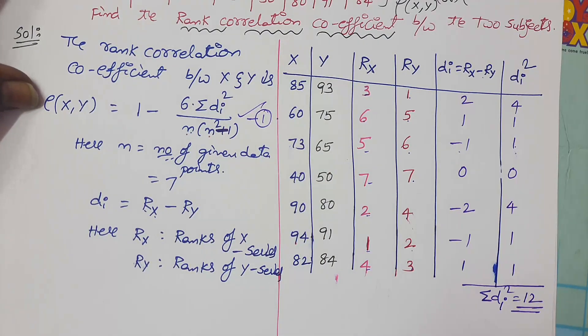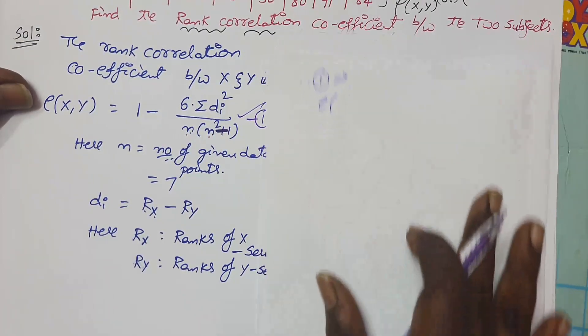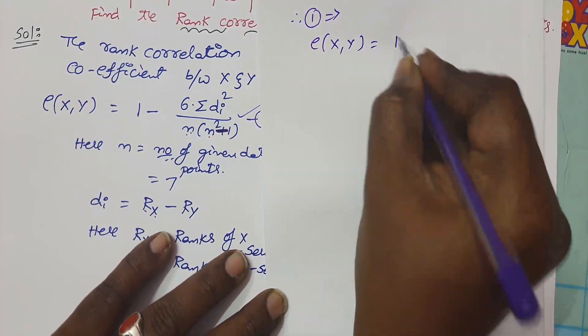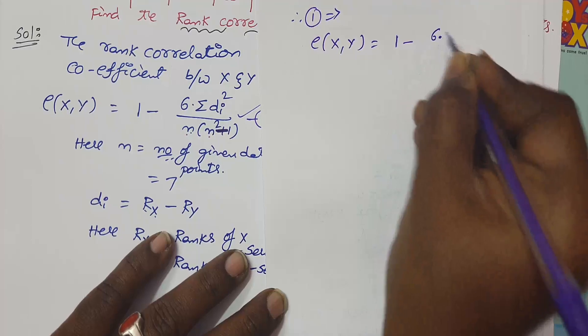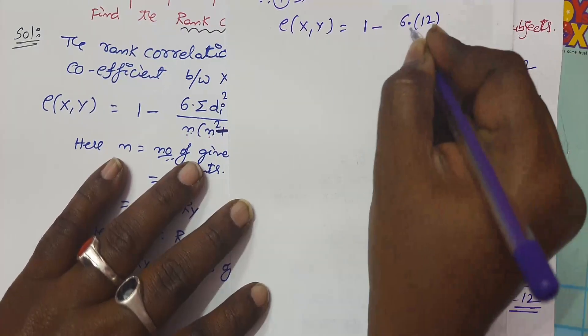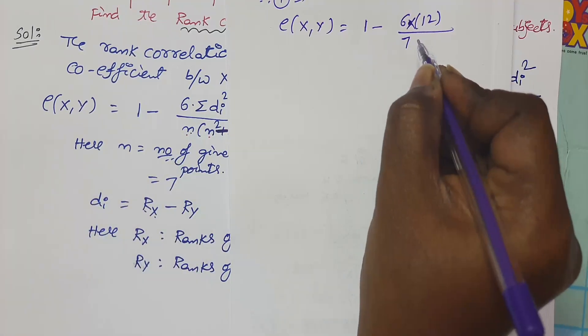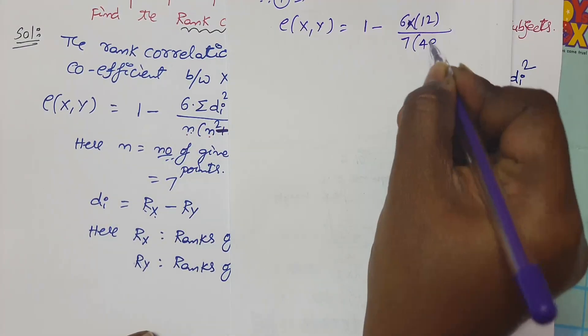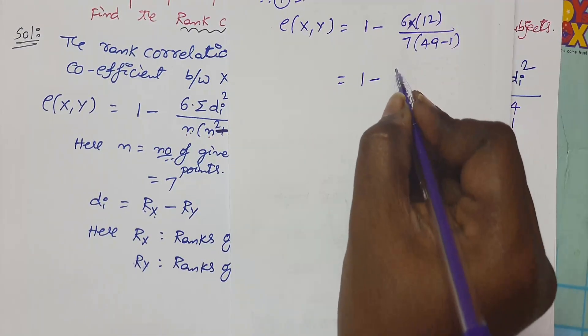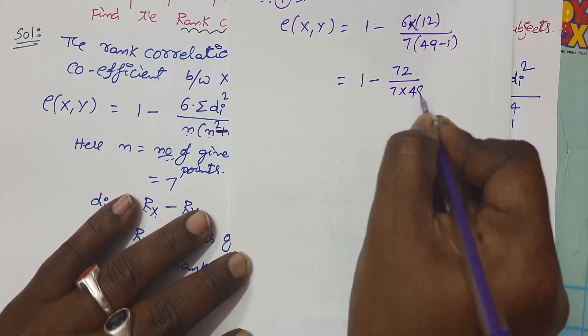Rho of XY is equal to 1 minus 6 into sum of di square, which is 12. So you will get 6 times of 12 by n, which is 7, 7 into 7 square, 49 minus 1. So 1 minus 6 times 12 is 72 by 7 times of 48.